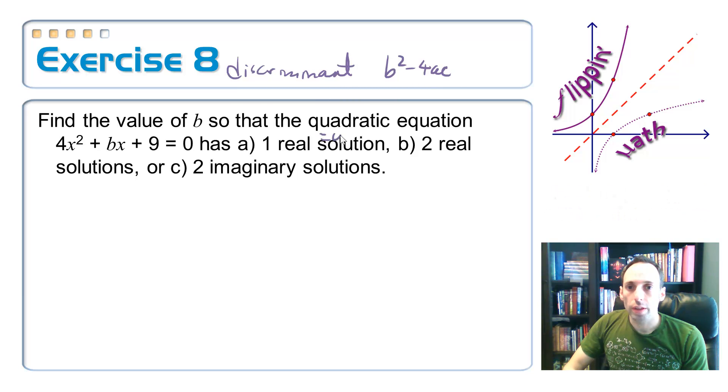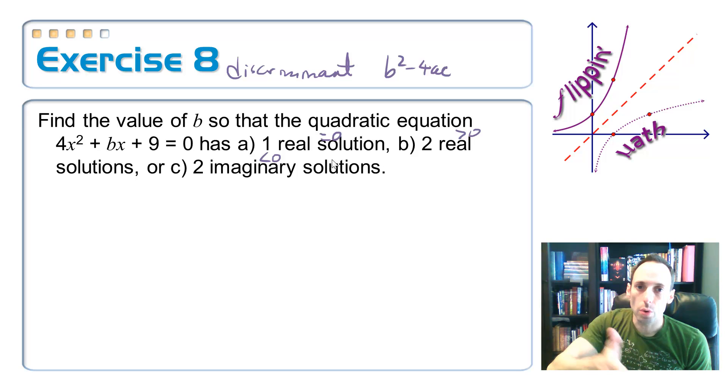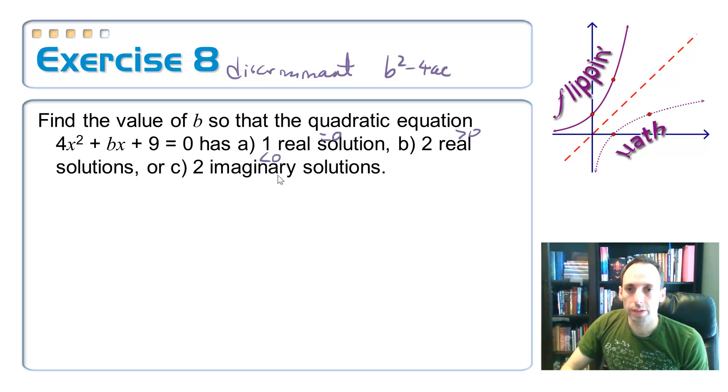Which is the b squared minus 4ac. For the one real solution, that's got to be equal to zero. For two real solutions, it's got to be greater than zero. To imaginary, it is less than zero. Okay, so let's set this up, and instead of doing one, yeah, let's do this in this order, one real solution. Reason why is because we're going to have to solve the equation before an inequality. That makes sense.